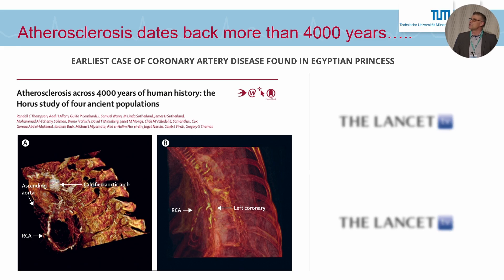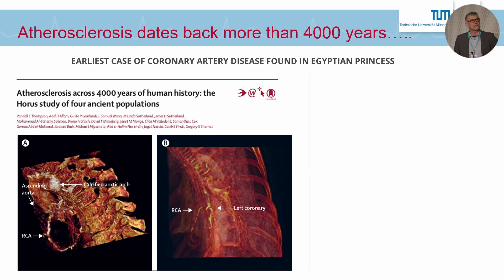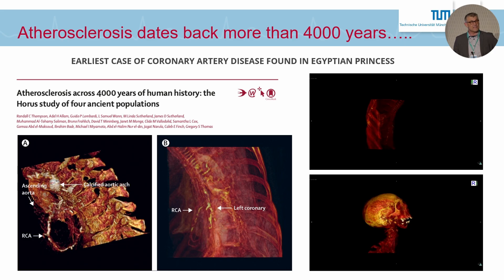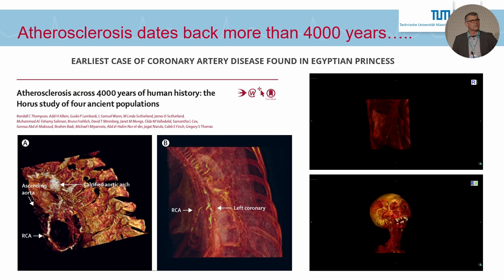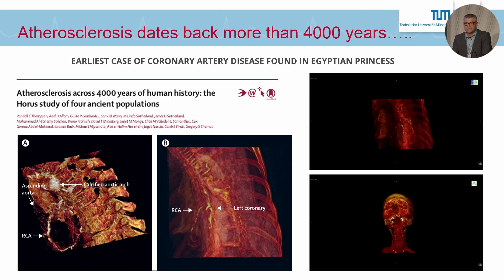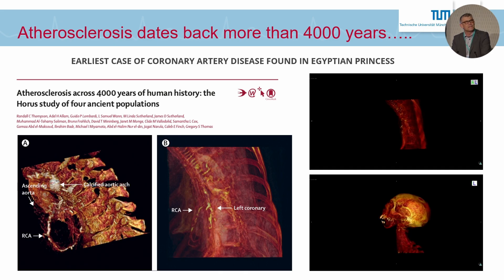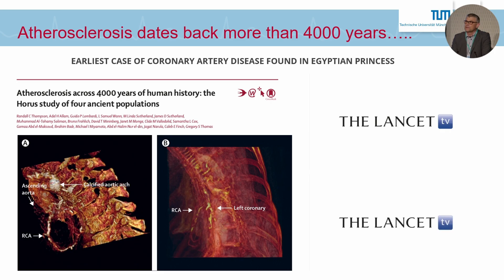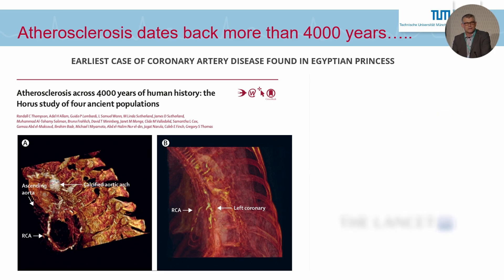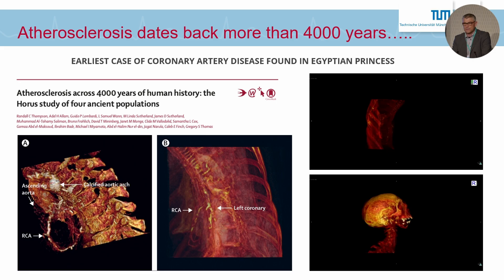I want to start with this slide, and I'm sure that many, if not all of you, have seen this. A publication in the Lancet some years ago. We understand that atherosclerosis dates back more than 4,000 years, and this is the first description of the earliest cases of coronary artery disease found in Egyptian princes. She was the first person where atherosclerosis was detected, and you can see in the CT scans that she suffered from severe calcification in her left anterior descending artery and also the RCA — something we get used to with CT being more prominent in our field these days.